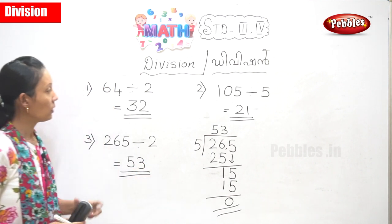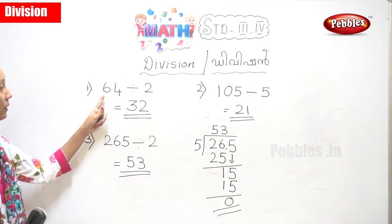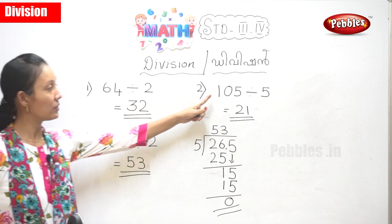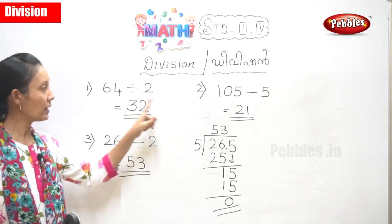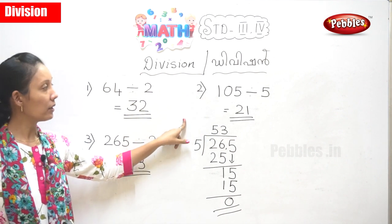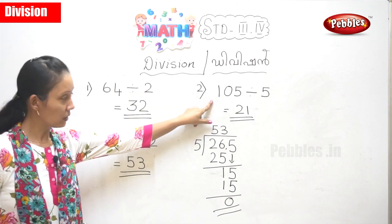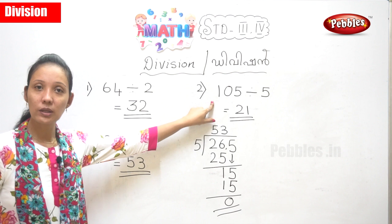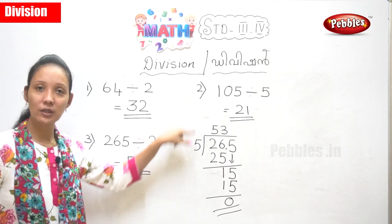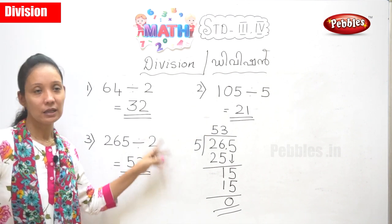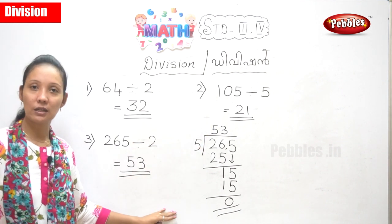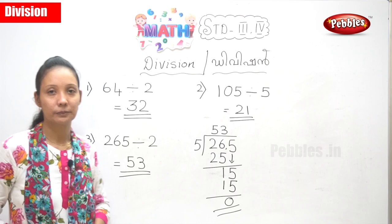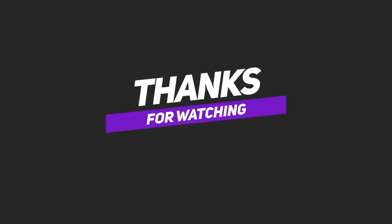So now we have done symbol numbers. Next we will learn again with three-digit numbers where you get a remainder. So the next thing we can learn about that.